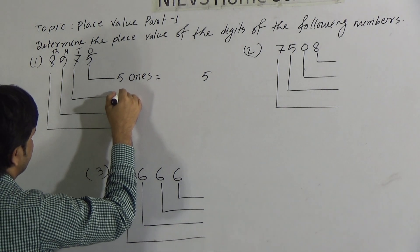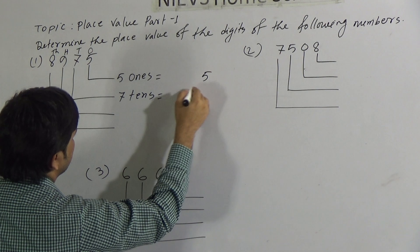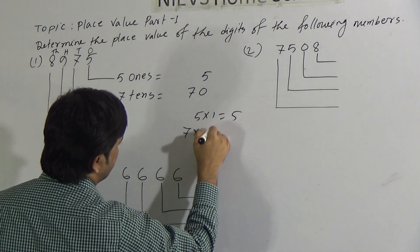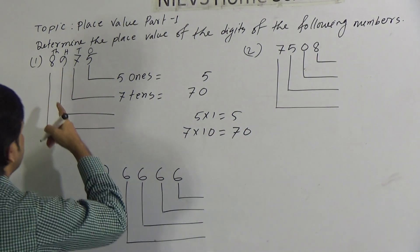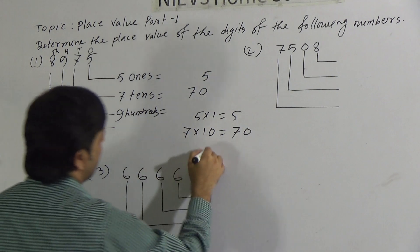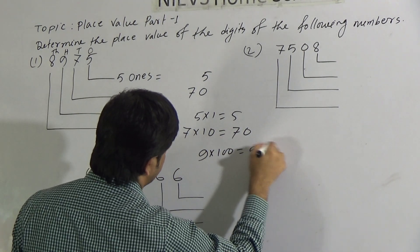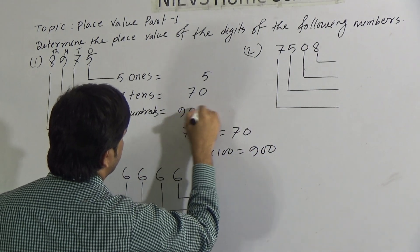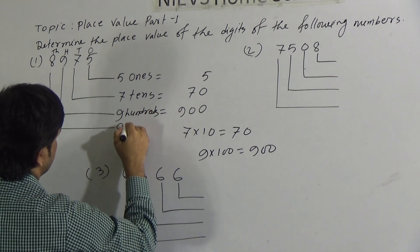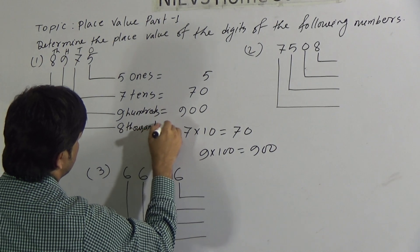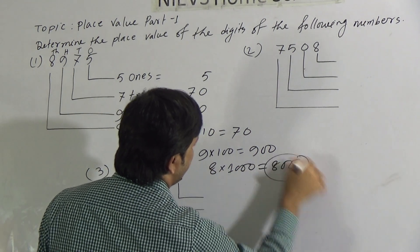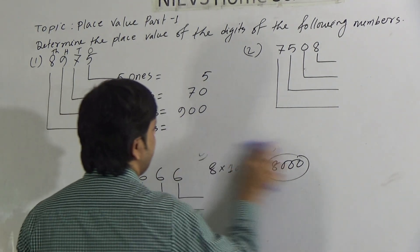Now 7 is in the 10s position, so we write 7 tens. Multiply 7 by 10, we get 70. Then 9 is in the 100s place, so we write 9 hundreds, giving 900. So 900 is the Place Value of 9. The last digit is 8, which is in the 1000s place. So we write 8 thousands. Multiplying 8 by 1000, we get 8000. So the Place Value of 8 in this number is 8000.